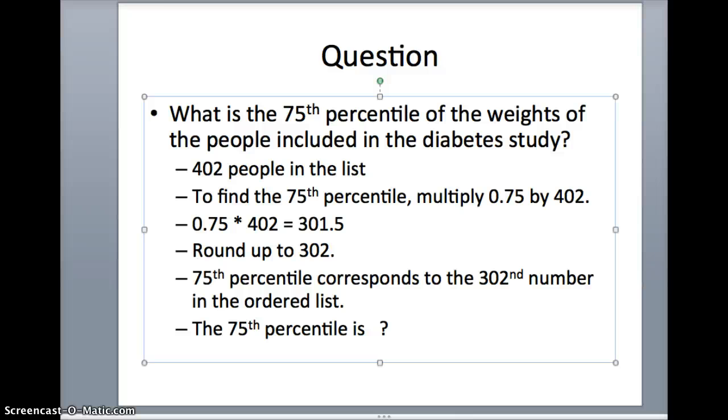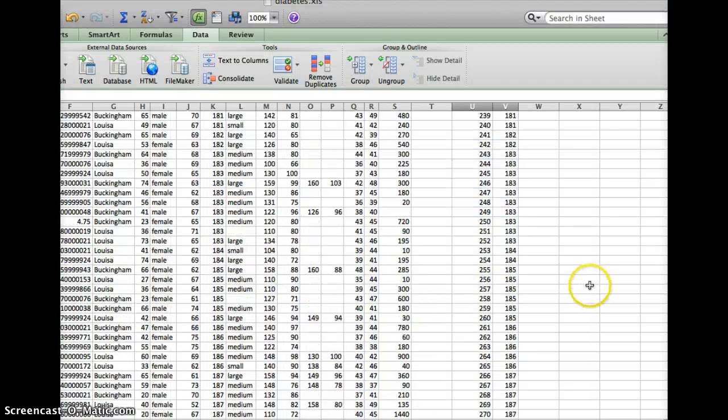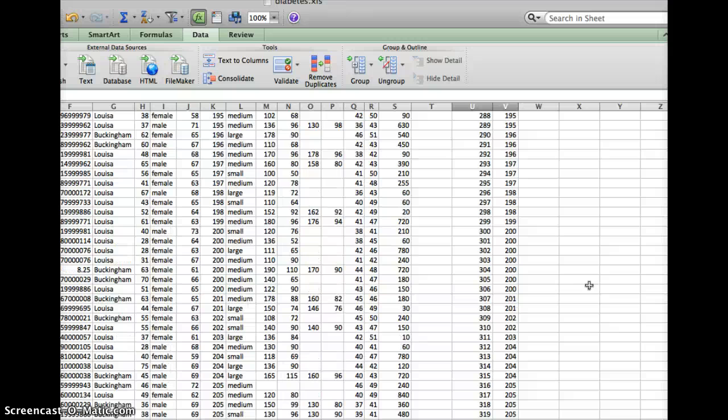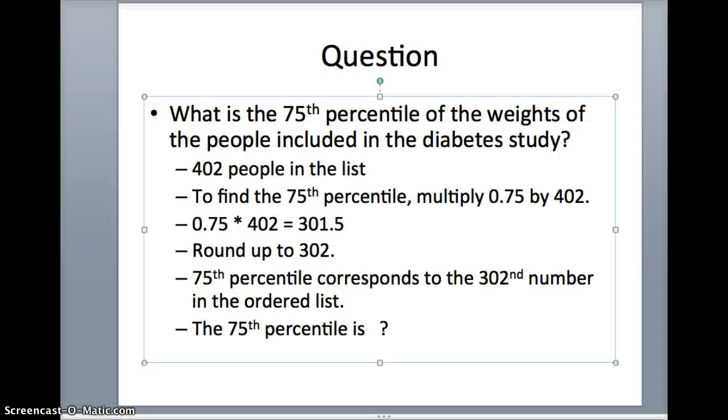I round that up to 302. If that's the case, the 75th percentile corresponds to the 302nd number in the ordered list. We go back to Excel and look for number 302. The 302nd number in the list appears to be 200. We could argue the 200 pounds represents the 75th percentile.